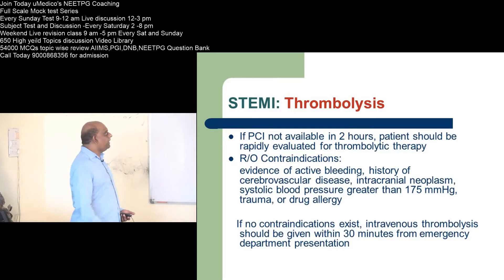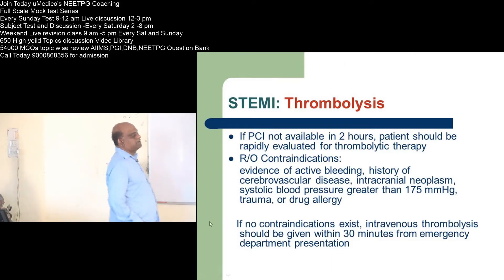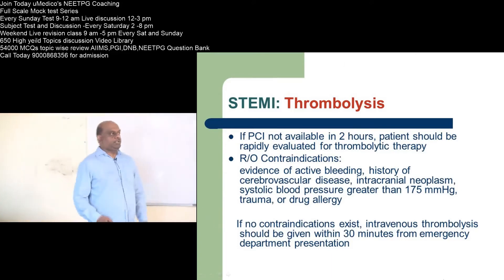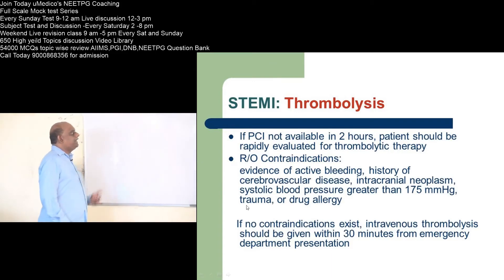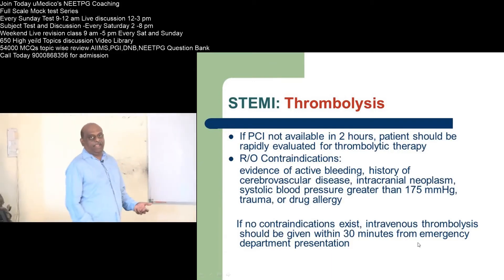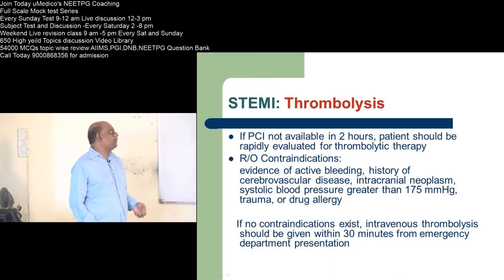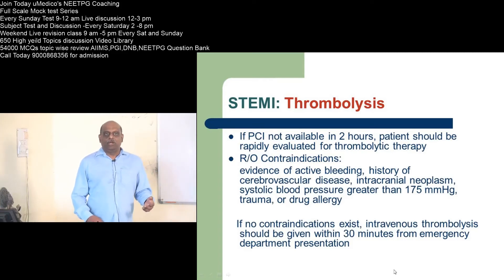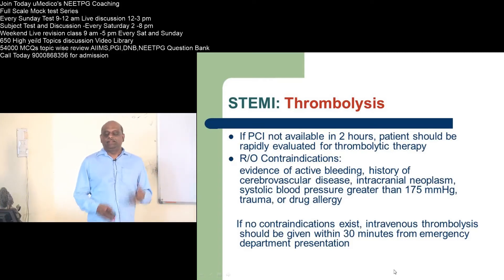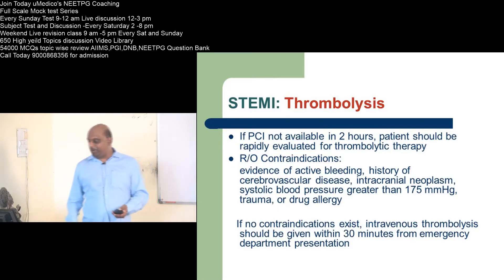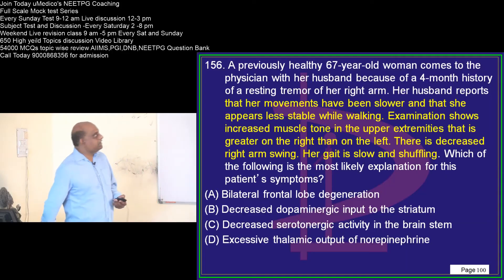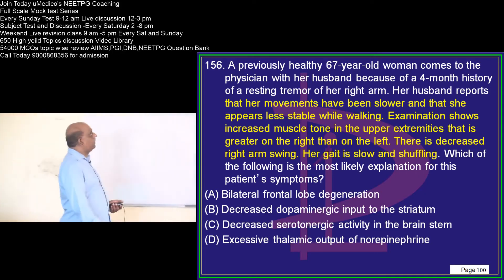What are the important contraindications you should rule out? Any active bleeding, history of CVA, any intracranial neoplasm, systolic BP more than 175, any history of trauma, or any drug allergy — these are the things you need to evaluate and rule out.